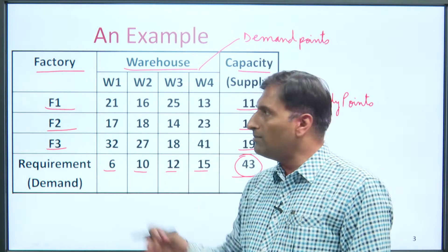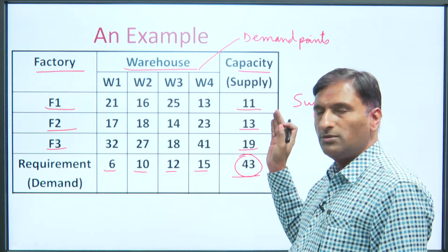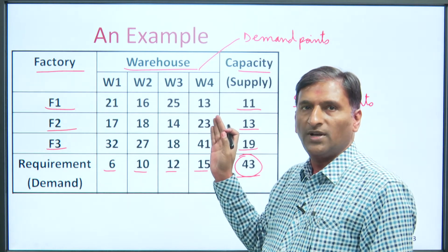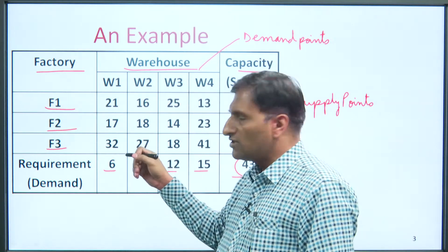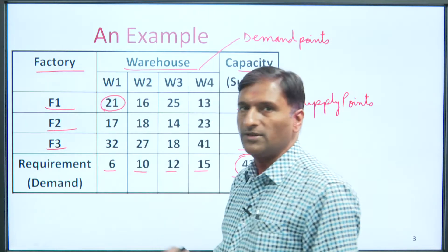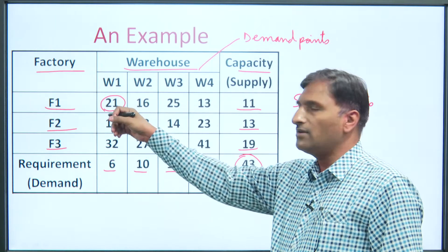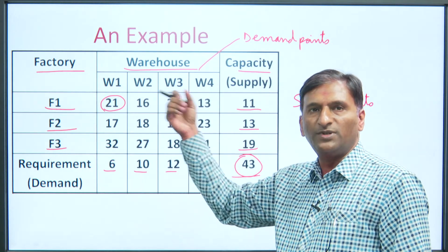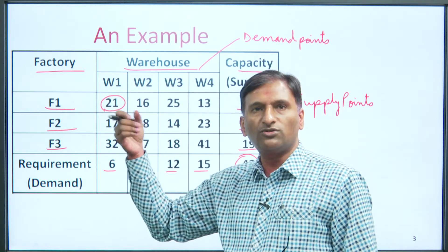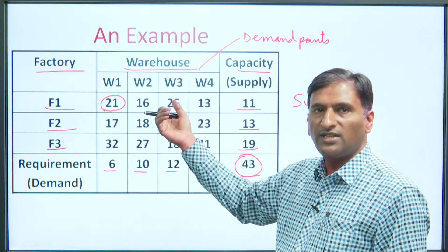What we need to do: units are being produced at different factories, and after production these units need to be transported to different warehouses. The per-unit transportation cost for transporting to each warehouse is given. From F1 to W1, if we send one unit the cost is 21 rupees. If we send two units it is 21×2, three units is 21×3, and if we send six units from there it would be 21×6.